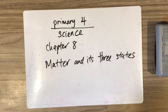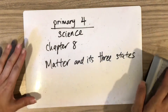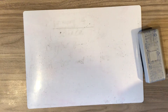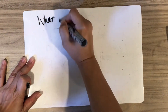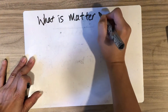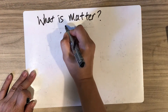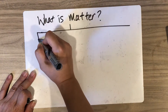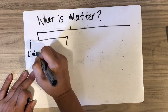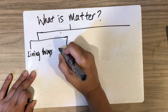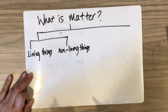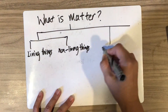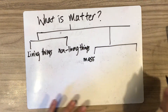Primary Four Signs, Chapter Eight: Matter and Its Three States. What is Matter? All living things and non-living things are made up of matter. Matter is anything that has mass and occupies space.